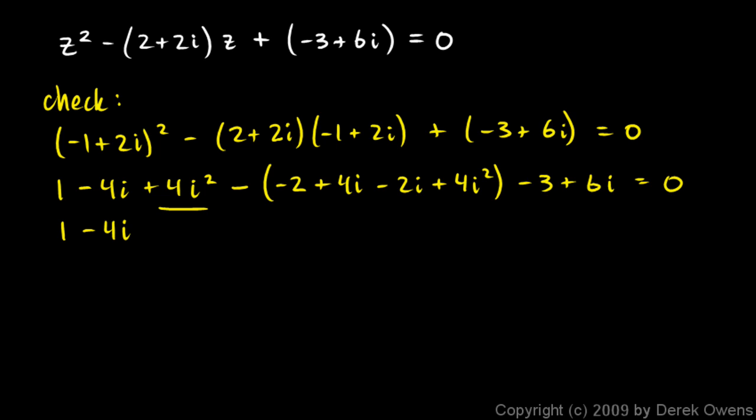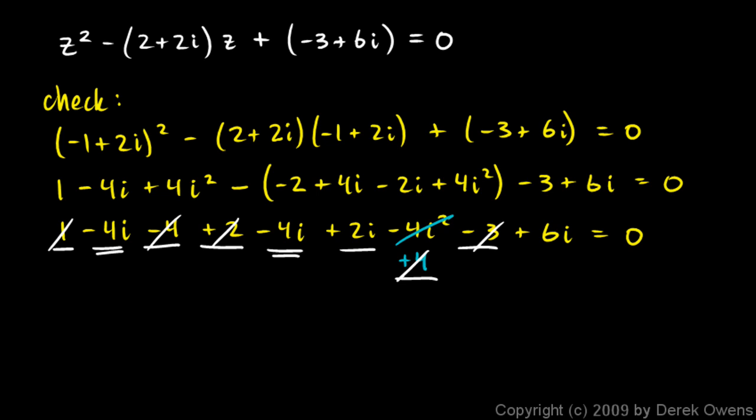Okay, let's distribute this negative sign here. 1 minus 4i. I'm going to go ahead and change that to a minus 4. Then we have a plus 2 minus 4i plus 2i minus 4i squared minus 3 plus 6i. Does that equal 0? Well, the minus 4i squared here is just the same as plus 4. And then let's check all of this stuff out. We have a 1, a minus 4. That gives me a minus 3. Plus 2 gives me a minus 1. Plus 4 gives me a plus 3 minus 3 is 0. So all of the real numbers actually do cancel out to 0. And let's see if our i's cancel out. We have a minus 4i and a minus 4i. So that's a minus 8i. And that cancels out with the plus 2i and the plus 6i. So all of those cancel out to 0. So that works.